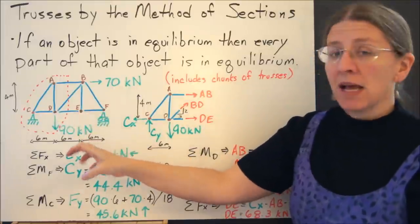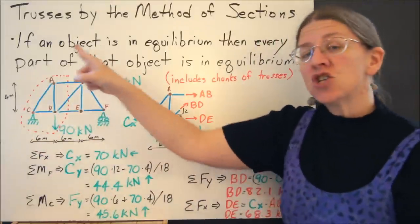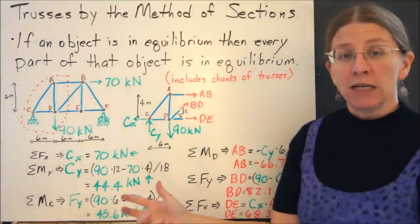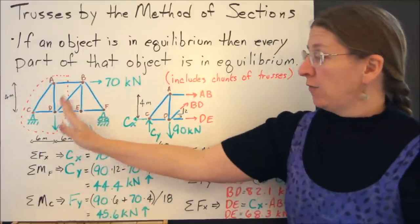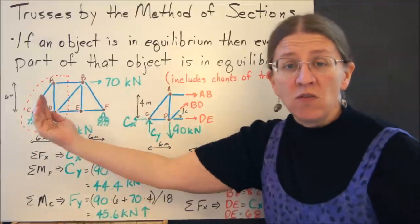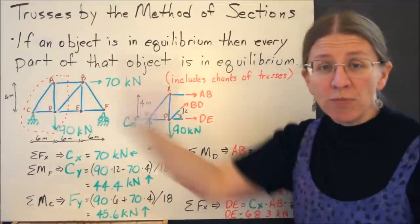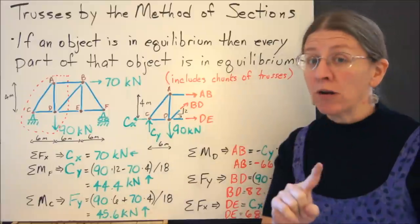What I want to do right now is say anything that's on this chunk must be in equilibrium. After all, if only half of it was in equilibrium and the other half wasn't, then this half would be accelerating away from that half, and we call that a broken bridge.